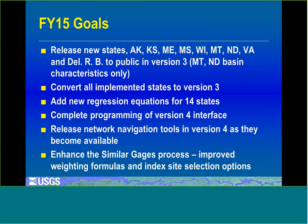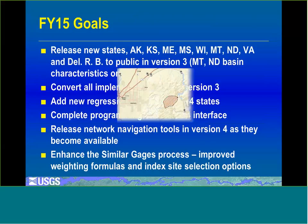This year we're trying to release several new states in version 3. We're going to convert all existing states from version 2 to 3, add regression equations for 14 states, complete programming for the version 4 interface, and plan to release network navigation tools in version 4 as they become available — probably having some states in version 4 with network navigation by early fall, and hoping to have all tools available by the end of the calendar year. We're also going to enhance the similar gauges process.